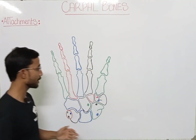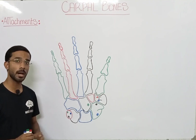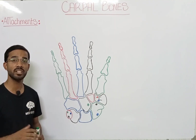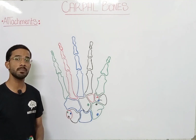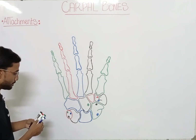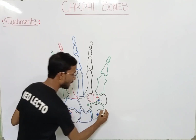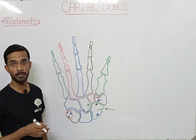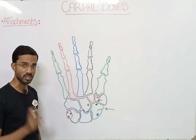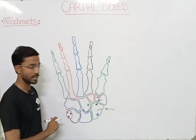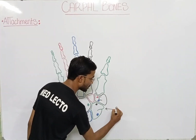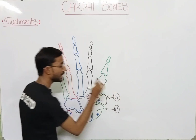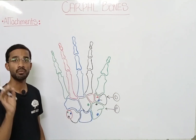First of all, if we quickly revise the carpal bones, basically there are eight carpal bones that are actually arranged in two rows: the proximal row and the distal row. The row that is actually near to the center of the body will be the proximal row, and after that you will see the distal row. In each row you will see four bones.